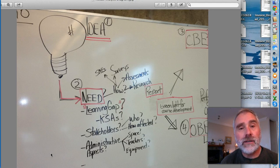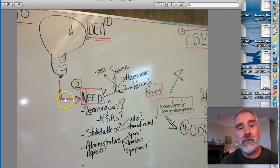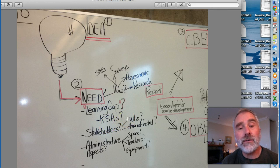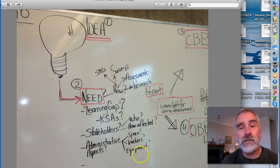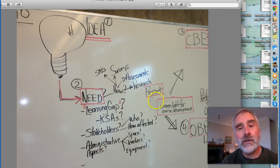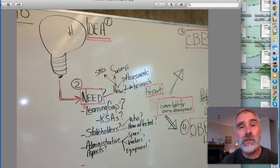Let's take a look at this picture — hopefully that will help. If you have the big idea, is there a need for it? Is there a learning gap? What is the learning gap — knowledge, skills, attitudes? Who do you talk to? You talk to stakeholders. Which stakeholders? How are they affected? You do it by talking to SMEs, by way of surveys, assessments, and research. You think about administrative aspects — space, teachers, equipment — which affects the cost and viability of a course. Put all this together into a report, then recommend to the powers that be — your stakeholders, your boss, or whoever might buy or run the course. You get a green light for course development, then make a choice about a curriculum approach.